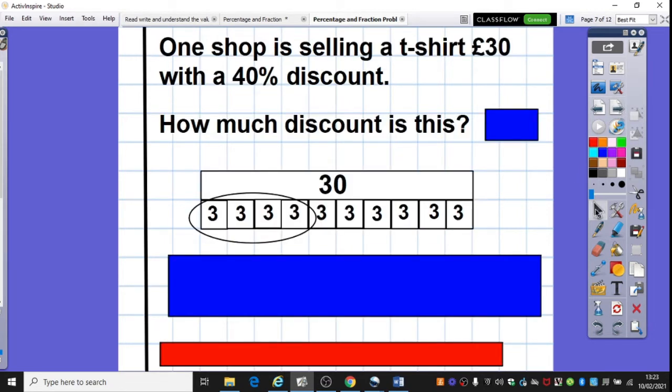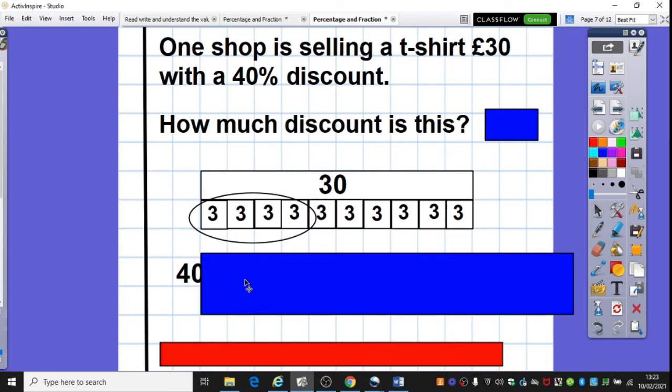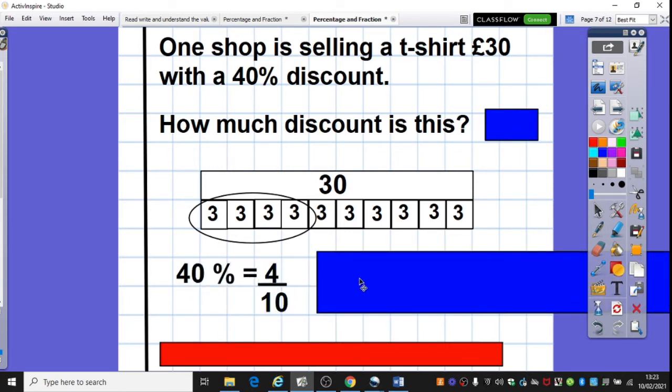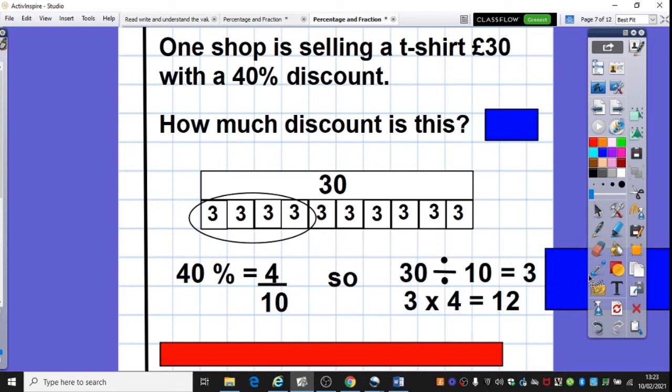Let's have a look at the first problem then. One shop is selling a t-shirt for £30 with a discount, 40% discount. How much discount is this? This is very similar to what we were doing last session. So we've obviously got our £30 here. And our 40% discount is obviously equivalent to 4 tenths. So we need to find 4 tenths of 30 in order to find how much the discount is. So we're going to divide by 10 to begin with. 30 divided by 10 is 3. That's why each tenth is worth 3. We need 4 of them. 4 times 3. 3 times 4 is 12. So the discount then is that £12.